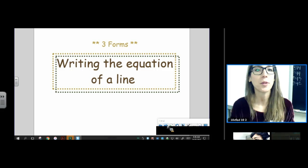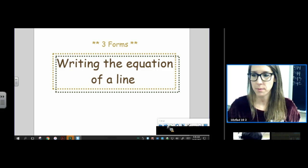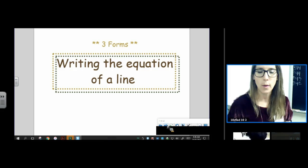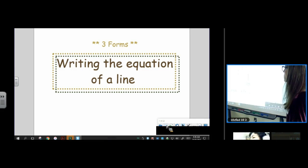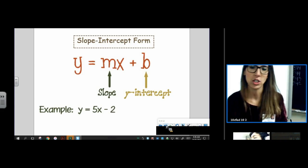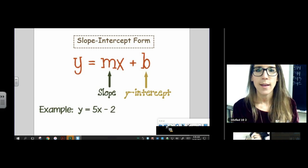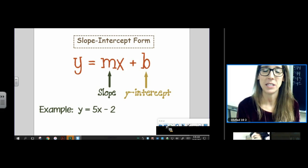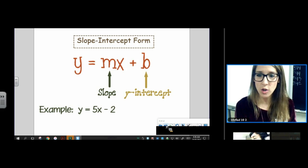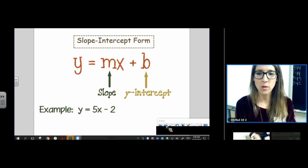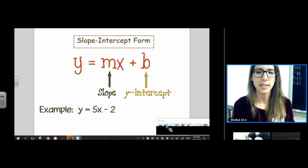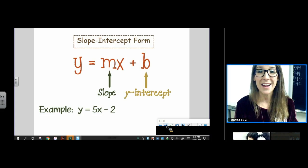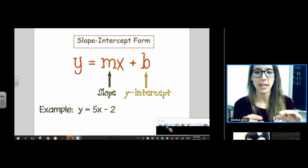Now, there are three forms that we use that most mathematicians use when writing the equation of a line. So let's just write down the three forms in our notes. You don't even need to write down the example, let's just write down the forms. Our favorite one and the one we're going to spend the most time in is slope intercept form, y equals mx plus b.